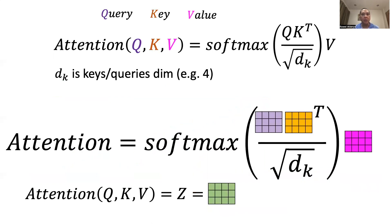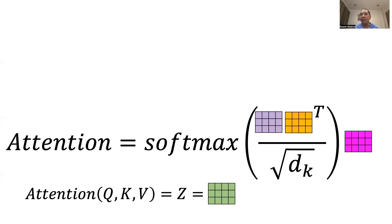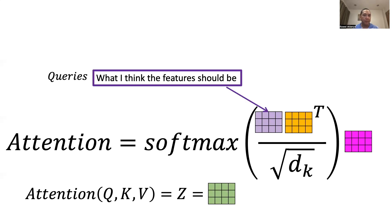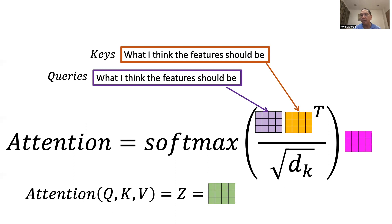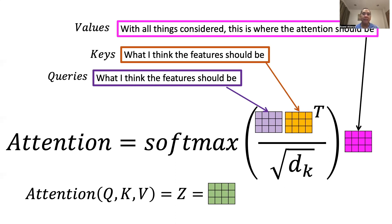Mathematically, attention is expressed using this equation. The weighted dot product between Q and K is converted to probabilities using softmax. Dk, or feature dimension, is the normalization factor. Then the value tensor is rescaled by these probabilities. The output is a new set of features, z_k. Roughly, we can interpret query, key, and value as follows: Query is what it thinks the output should be. Key has its own opinion on what the output should be. With the opinions of query and key taken into account, the value is rescaled to make the final set of features, z_k.